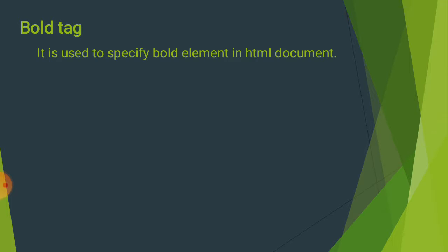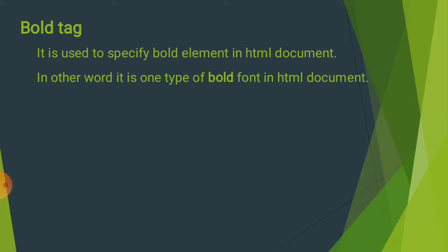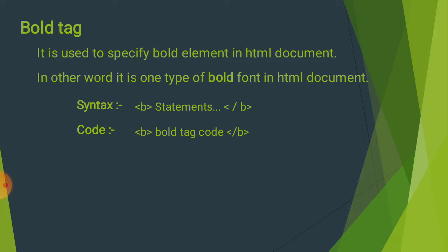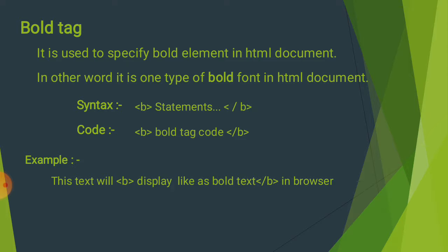Bold Tag: It is used to specify bold element in a simple document. Browser पर bold text के रूप में show होता है — it is one type of bold font in a simple document. जैसे MS Office में bold text को bold करते हैं, उसी प्रकार browser पर bold text mention करने के लिए B-Tag use करते हैं। Syntax: B-Tag, Statement, B-Tag close. Code: B-Tag open, statement लिखा, B-Tag close. Example: 'This text will display like as bold' — output: display like as bold text.